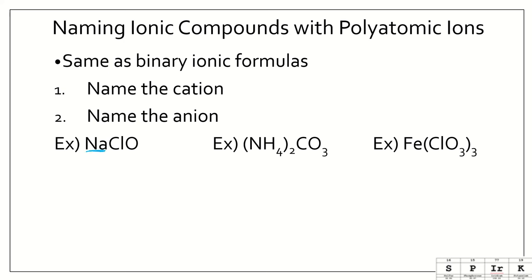So we have NaClO. So here's our cation. Here's our polyatomic ion. Na we know is sodium. And ClO is hypochlorite. Sodium hypochlorite. So here we have our cation and then our anion. Cation, anion.